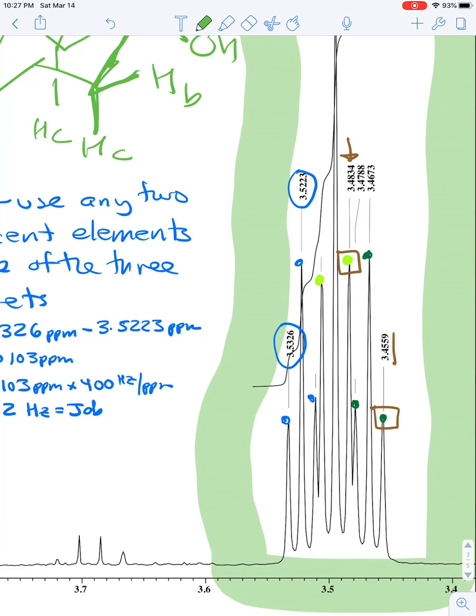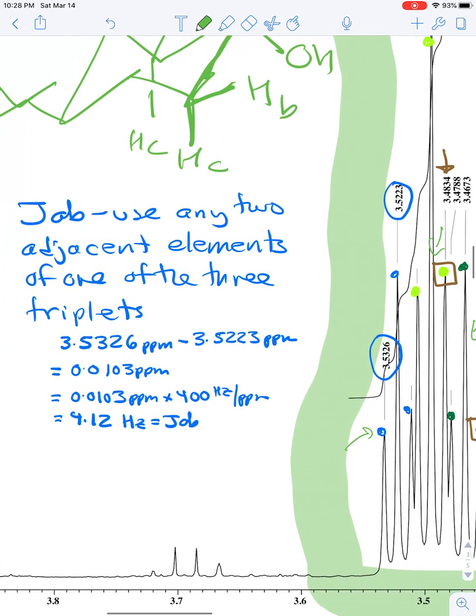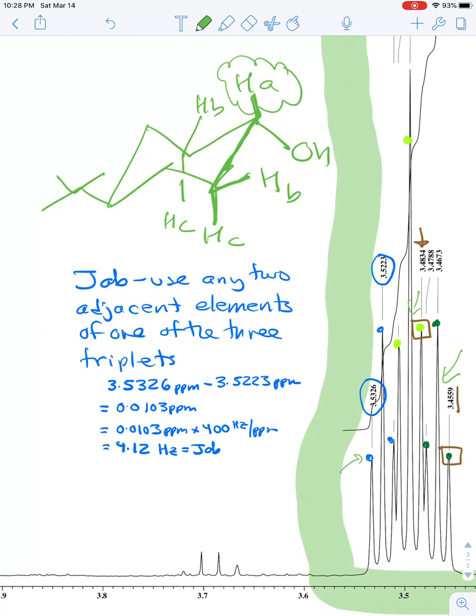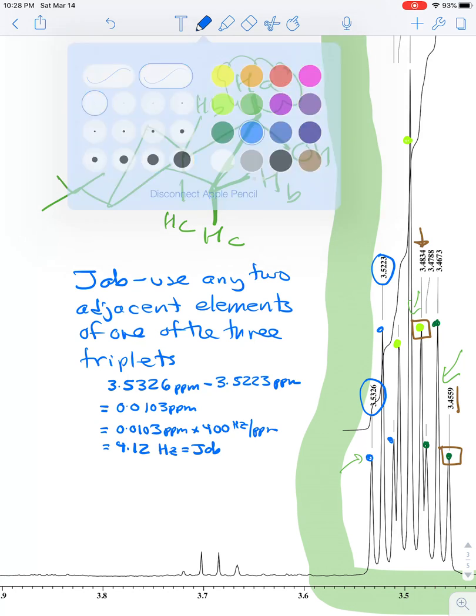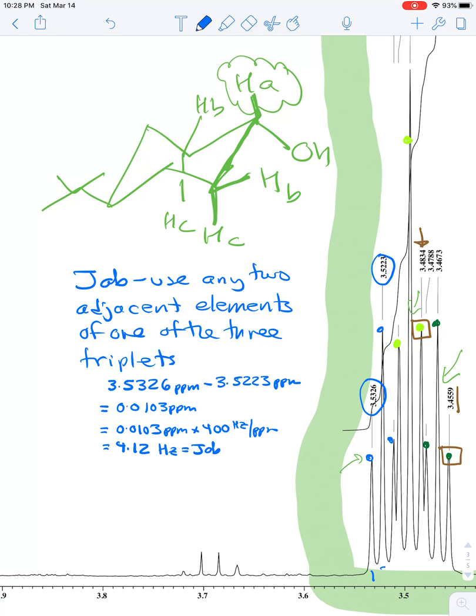And you can see that what I did here is I have each triplet that makes up the triplet of triplets written in a different color. So we have blue for one, and light green for one, and then dark green for the other one. And so in order to calculate JAB, which is the smaller coupling, we want to use any two adjacent elements of one of the three triplets. And so what I did is I picked signal 1 and signal 2, if you look at the total of the nine signals of the triplets of triplets.